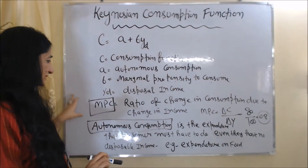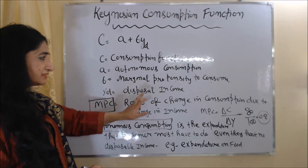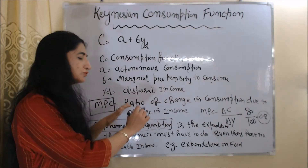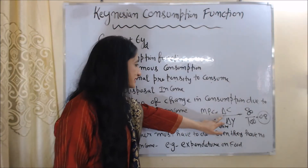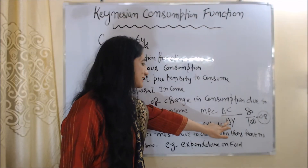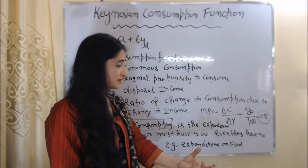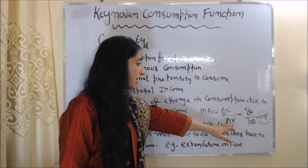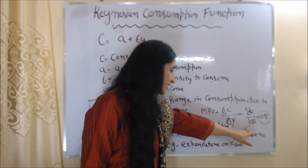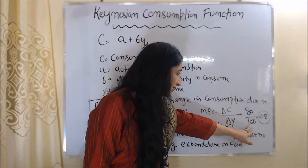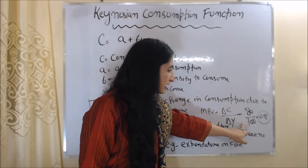Marginal propensity to consume, or MPC, is the ratio of change in consumption due to change in income. The formula for MPC is ΔC / ΔY, where ΔC is change in consumption and ΔY is change in income. For example, if the change in income is 100 and change in consumption is 80, then 80/100 = 0.8, which is our MPC.